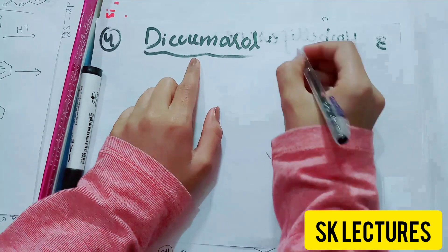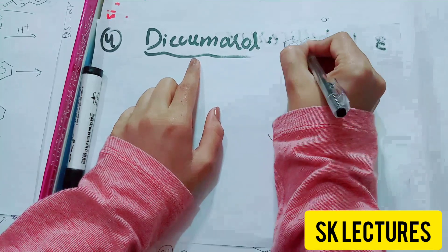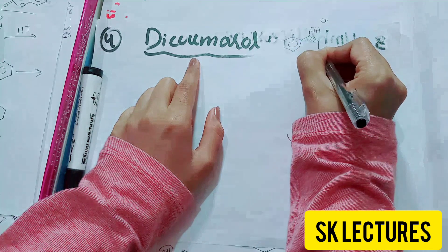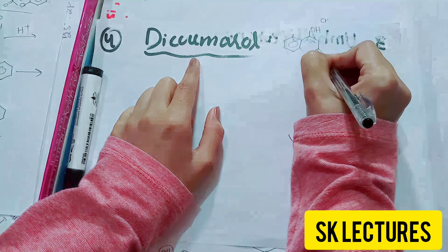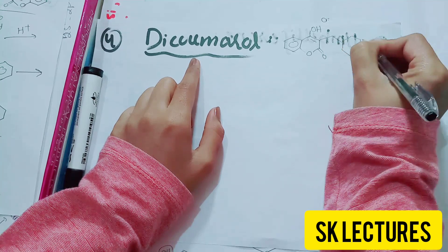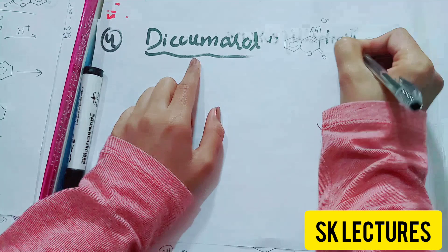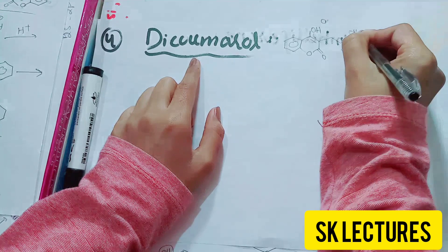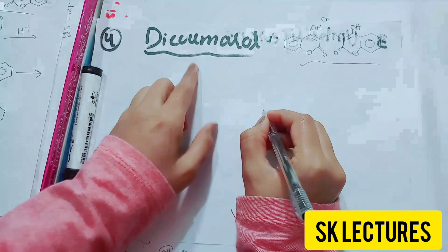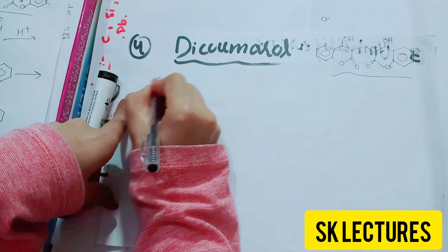This is Dicoumarol and it is used alone or with heparin in the prophylaxis and treatment of intravascular clotting. It has a wide range of biological activities, which is why I decided to give you the mechanism for its synthesis. This is the structure of Dicoumarol — now let's get started with its synthesis.